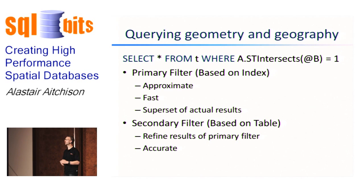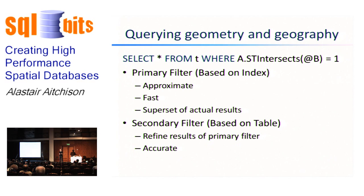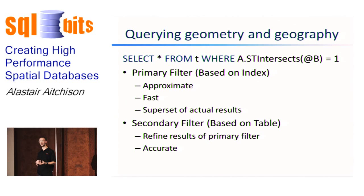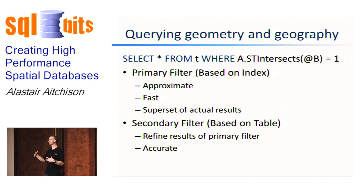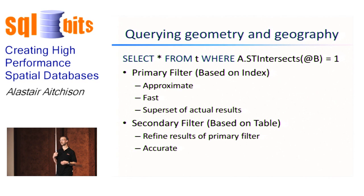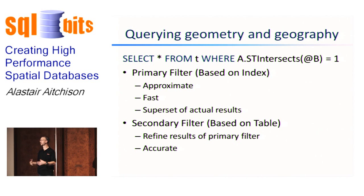These filters work on different data. The primary filter goes to the spatial index if one exists, and the secondary filter compares the actual values. If you don't have a spatial index, all the work must be done by the secondary filter, which is accurate but slow. For high-performance queries, you want as much work as possible done at the primary filter stage — making that guess as good and as fast as possible, with as few false positives as possible.